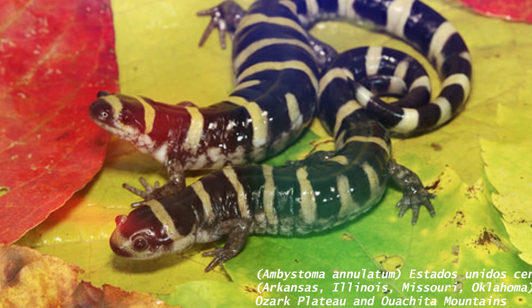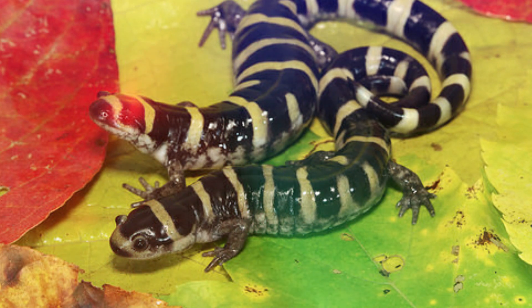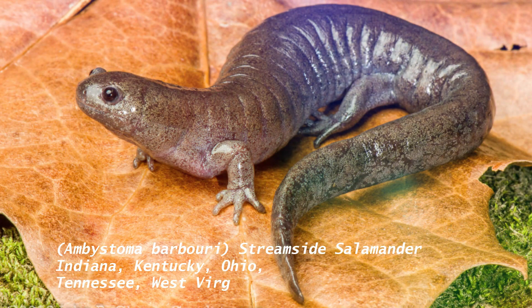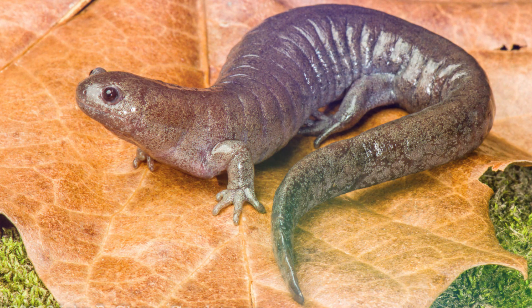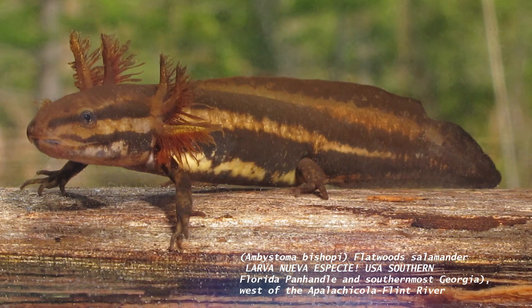Tenemos a Ambystoma annulatum como una de las especies americanas de las que se desconoce en América Latina. Difíciles de mantener, pero preciosos. El Ambystoma barbouri es una de las salamandras que vive en las corrientes bruscas de los arroyos de aguas frías en Kentucky, Indiana y Ohio. Pariente directo del ajolote de Xochimilco. No lo sabían tampoco, ¿verdad?